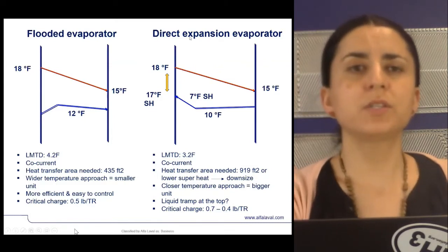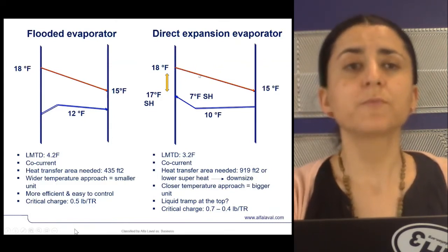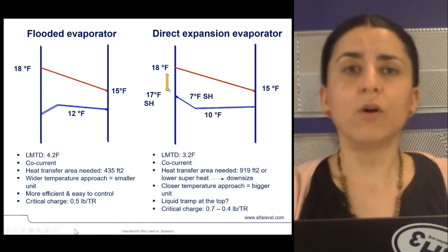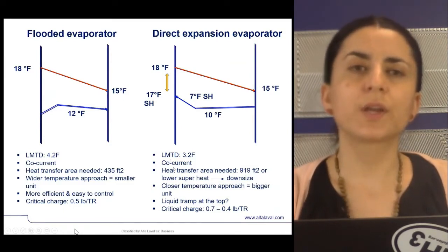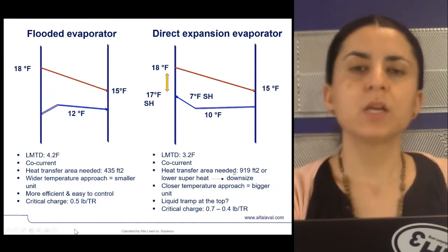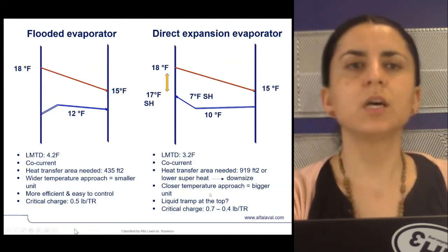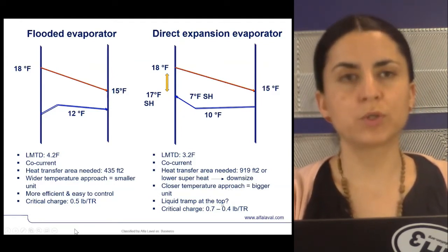On the opposite side, direct expansion requires a superheat value in order to guarantee no liquid carryover to the compressor. This superheat leads to a tighter temperature approach.